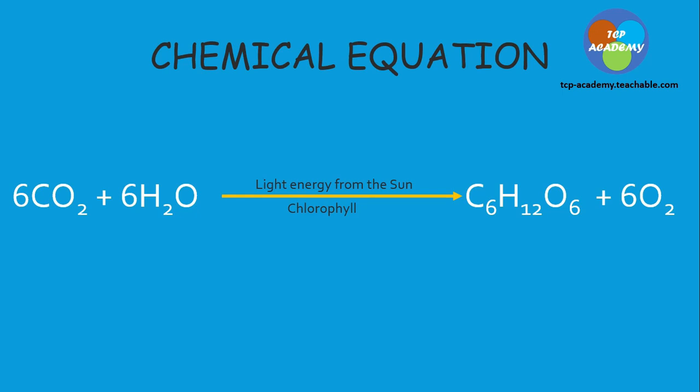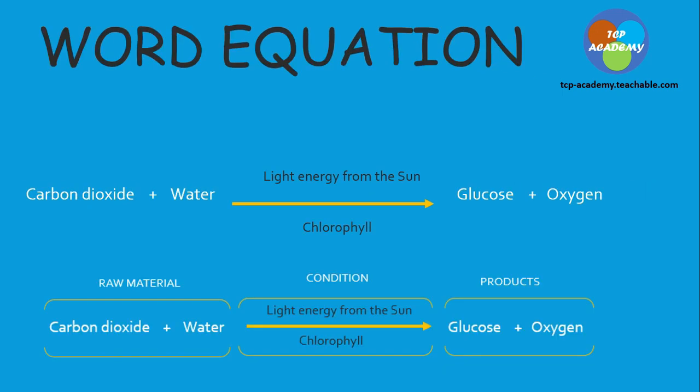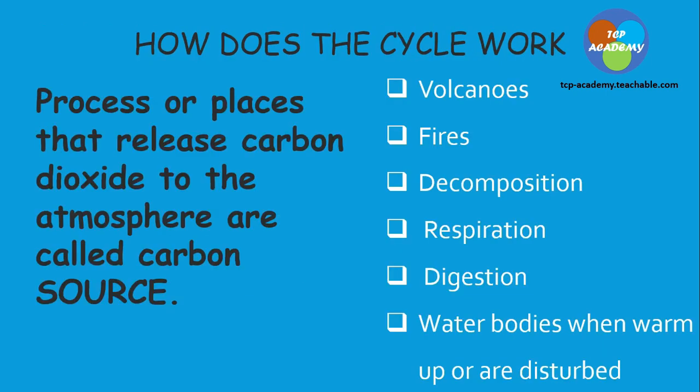A chemical equation to represent carbon as it moves: this represents photosynthesis — carbon dioxide plus water, in the presence of light energy from the sun, absorbed by chlorophyll, to produce glucose. We can look at the worded formula showing the raw material, the condition, and the product. Processes and places that release carbon dioxide to the atmosphere are called carbon sources.